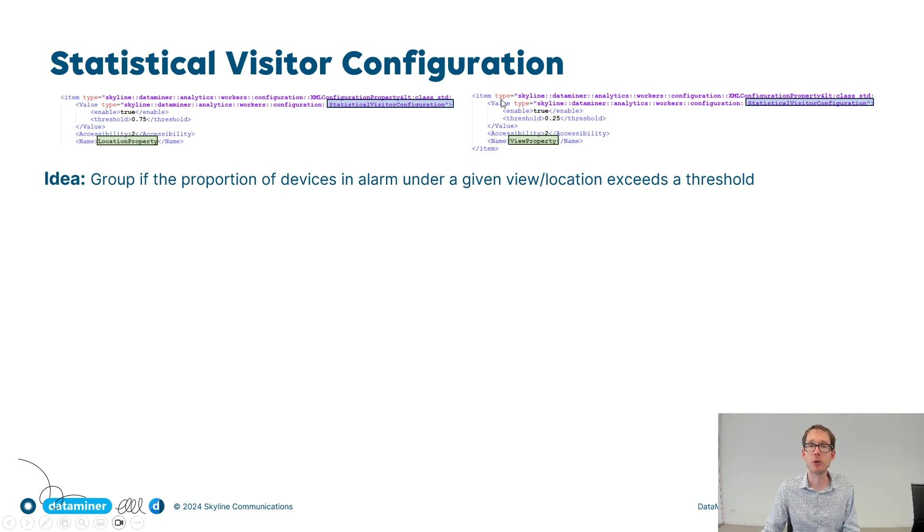There's a similar idea for the view property. Here, the threshold by default is set to 0.25, but you can tweak and change it how you want. What does this mean? Well, it means that we will group alarms on devices in the same view if at least 25% of the devices in that view have alarms. That's the idea.